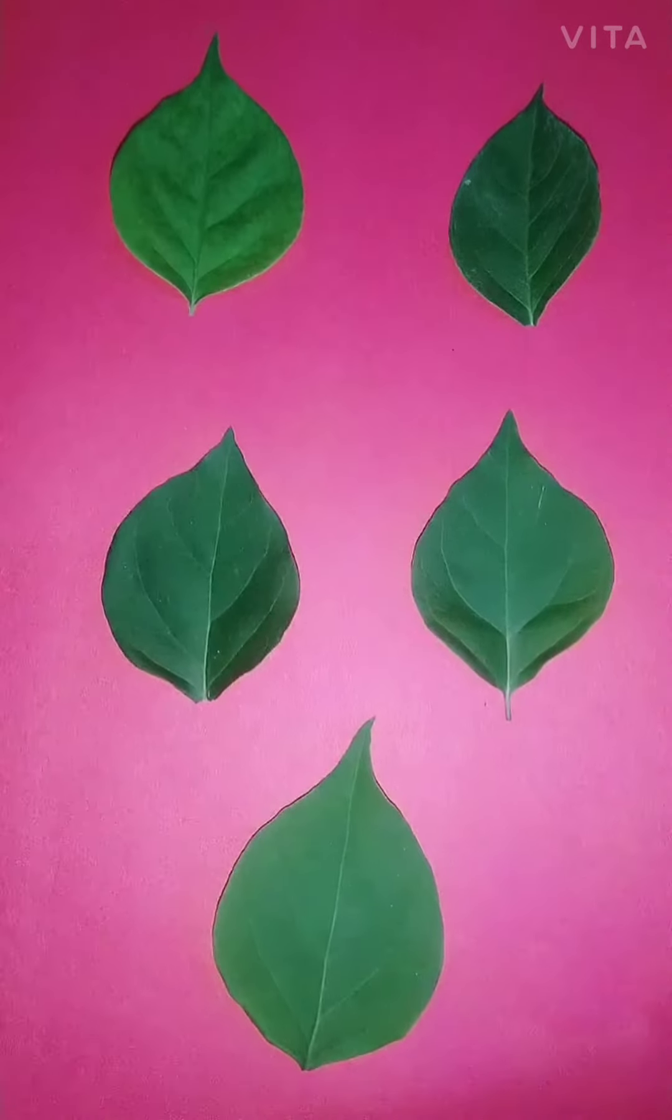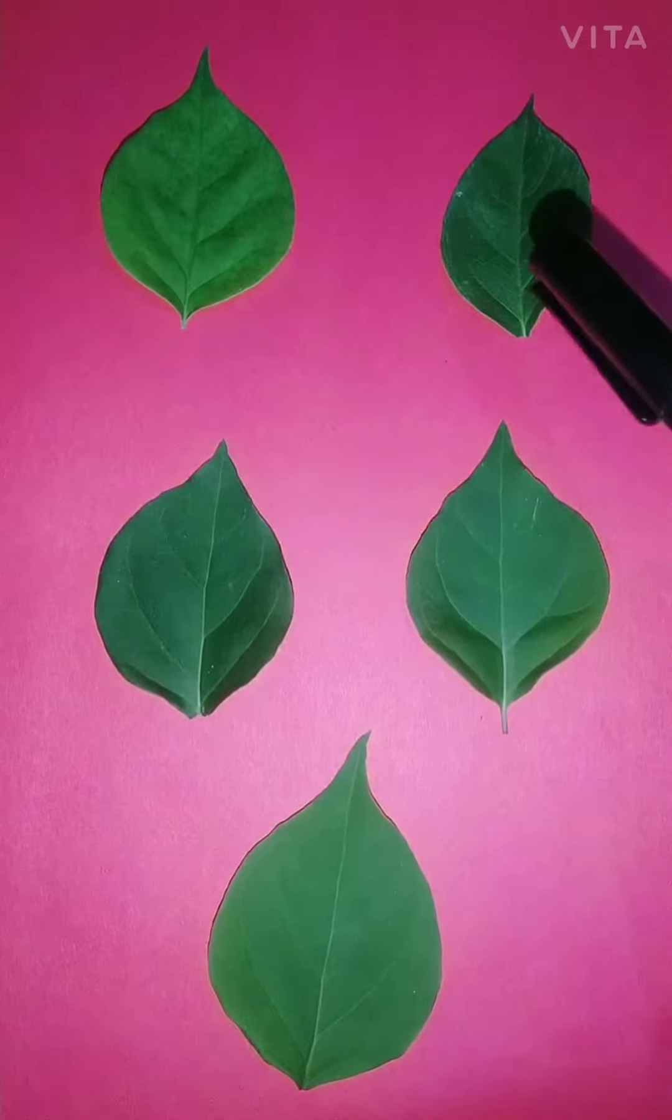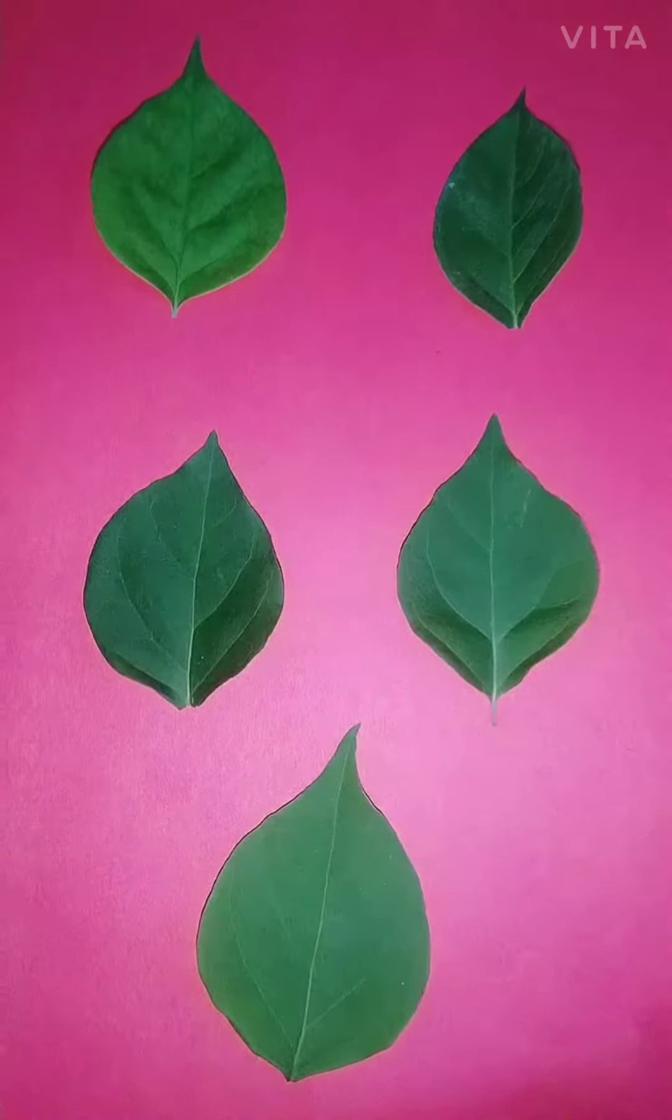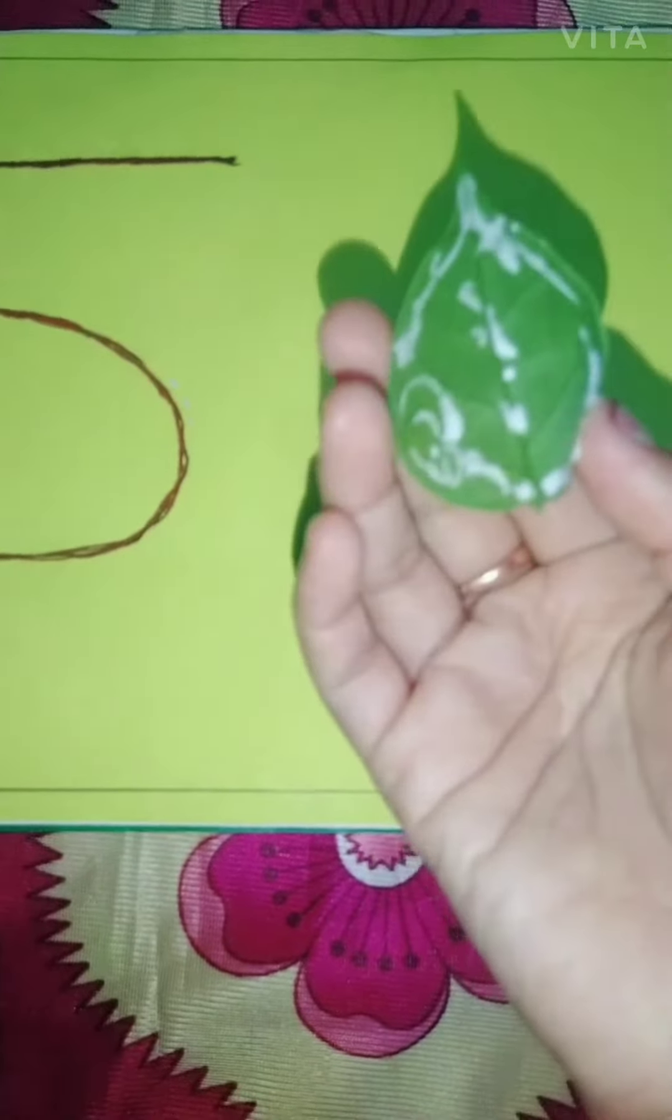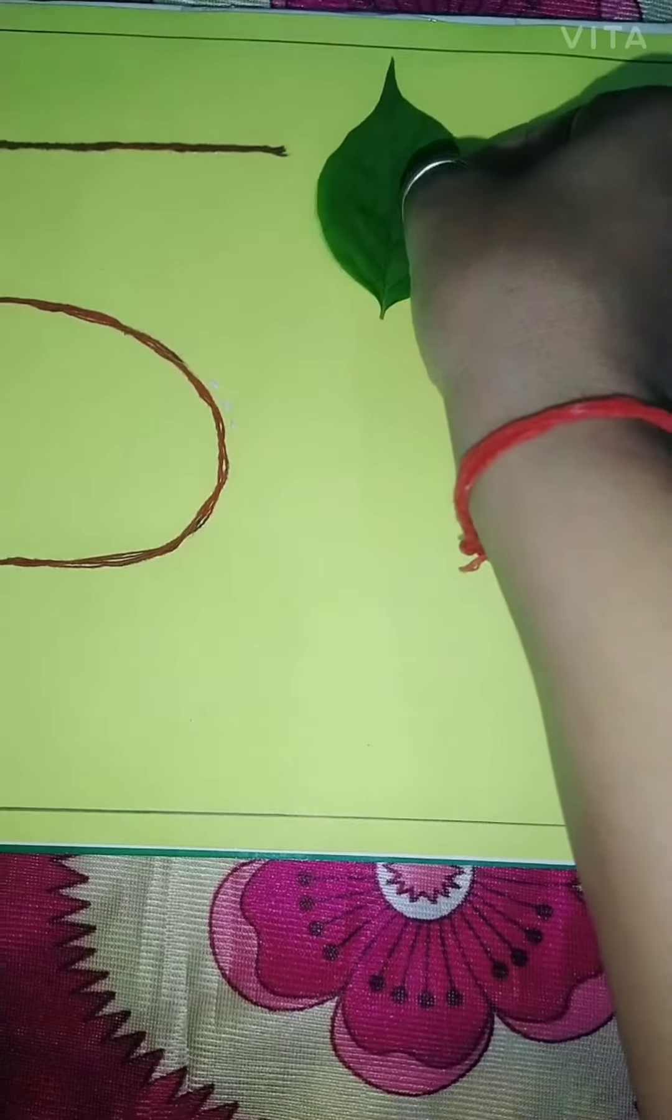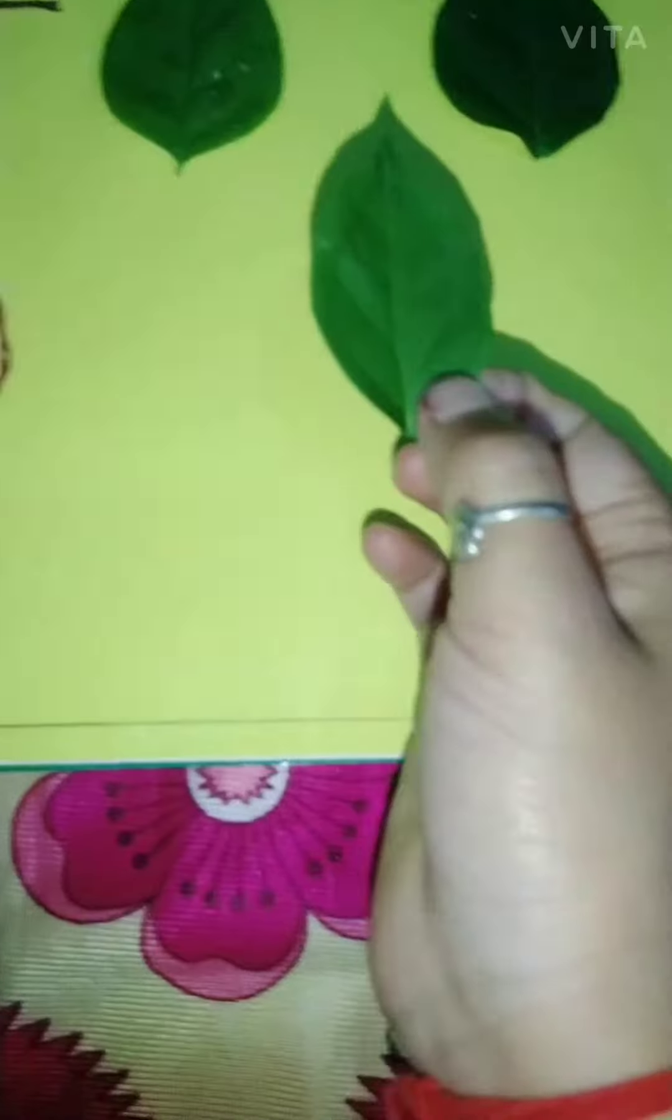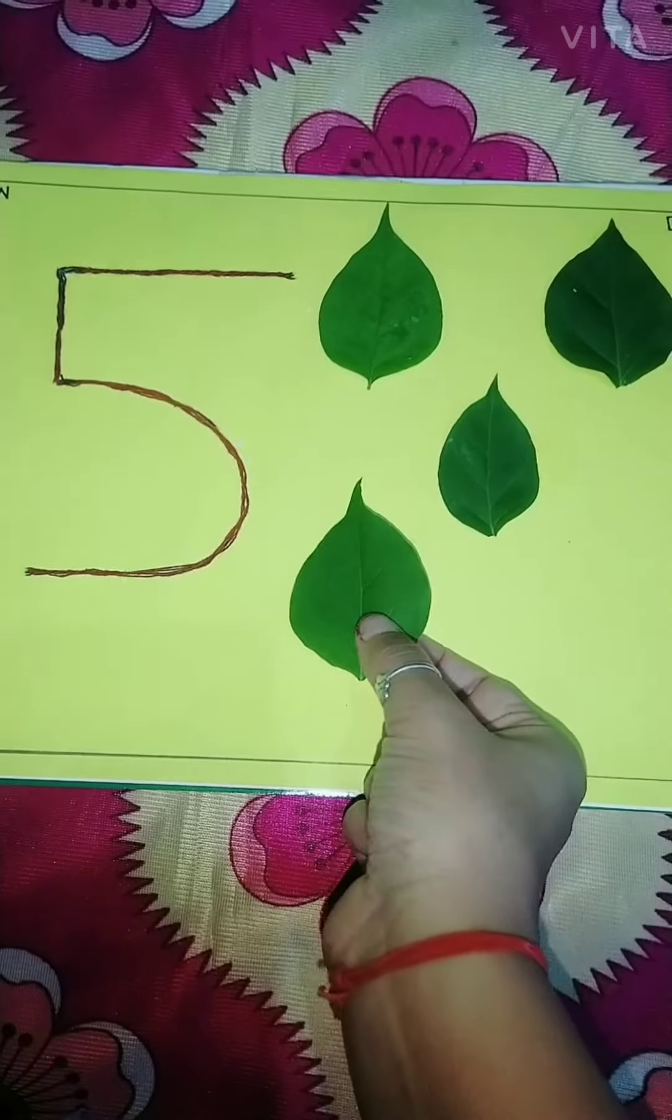So children, how many leaves are there? 1, 2, 3, 4, 5. Right? Abhi hum ne leaf ke niche, baby call lagaya hai. Abhi hum yehaan ushe stick karayenge and we will count. 1, 2, 3, 4, 5.